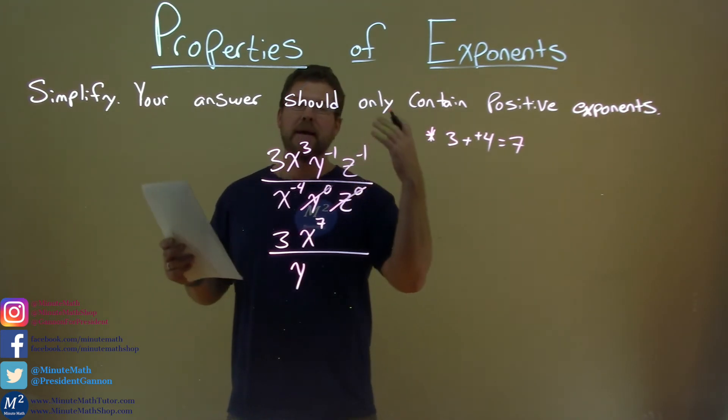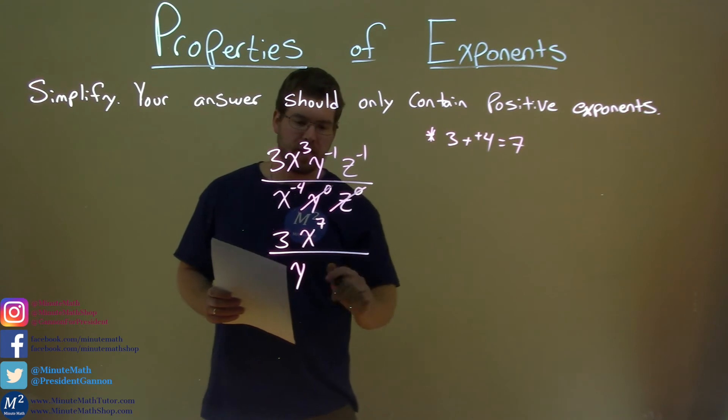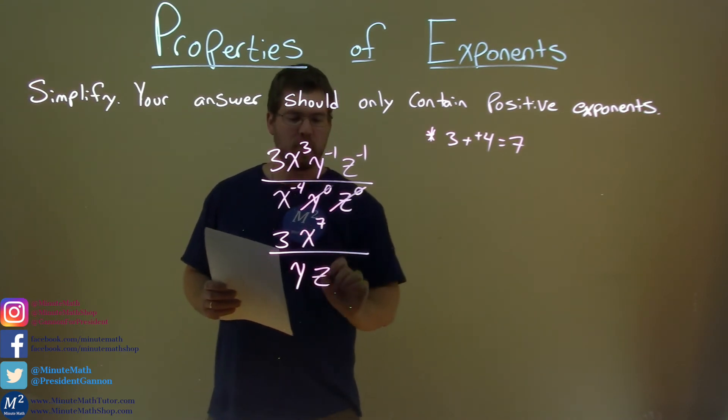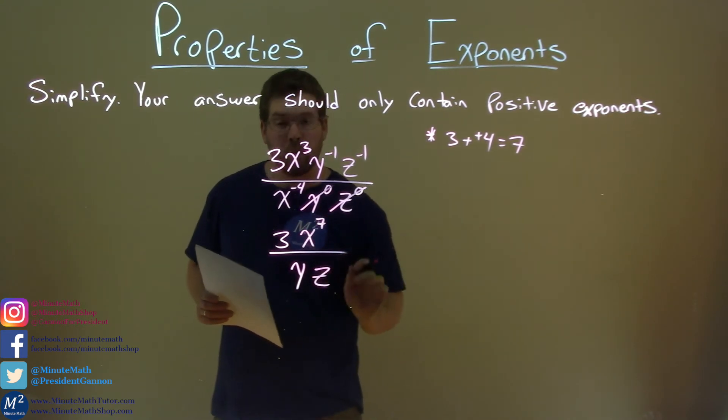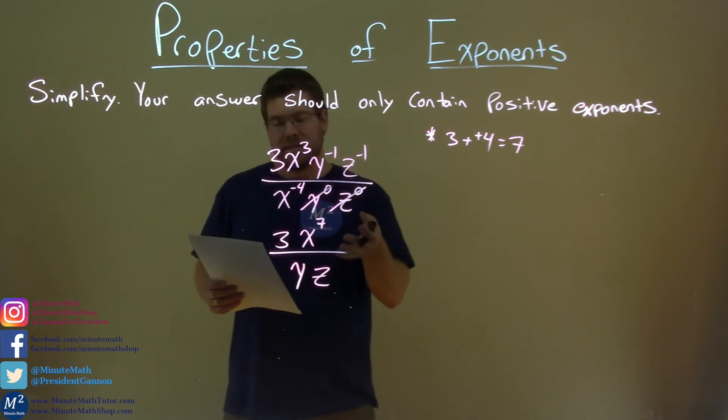z to the negative 1 exponent. Don't want that in the numerator. Put it in the denominator. z to the positive 1 power. Again, don't write that power to be 1. Just leave it as such.